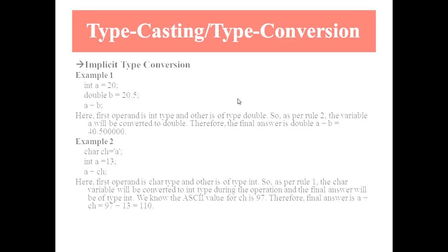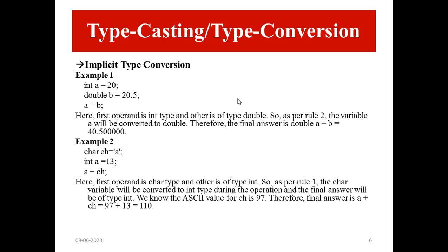Let's see an example. One integer type variable is declared with value 20 assigned to it, and one double type variable with value 20.5 assigned to it. Then we compute a plus b. In this case, the first operand is of integer type and the other operand is of double type. So as per rule 2, the variable a will be converted to double, and then the final answer is double. a plus b is equal to 40.5.